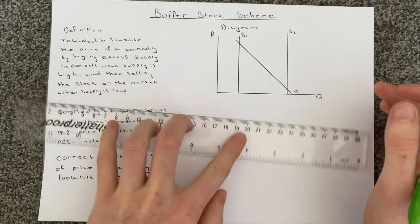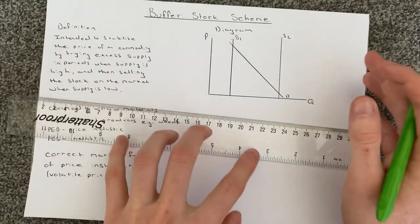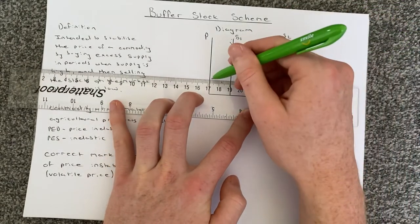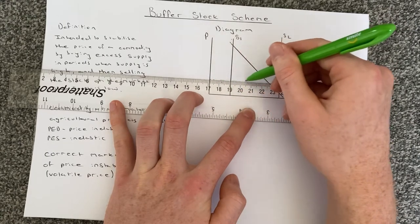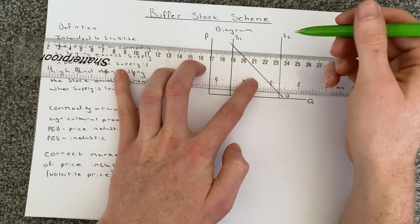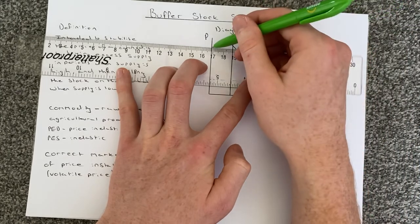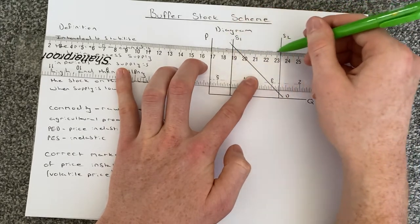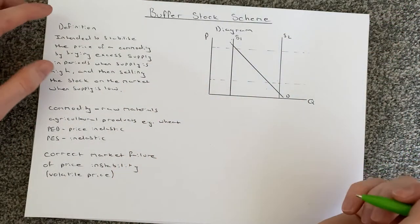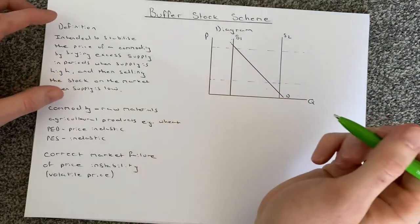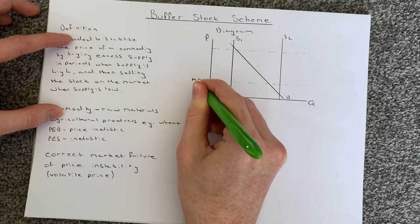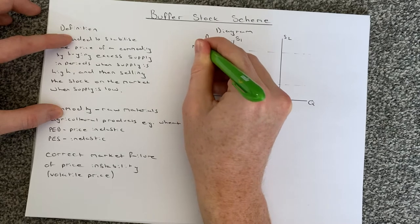What we're going to do now is add in some prices. We'll draw in a dashed line here and continue it past our supply curve, and then draw another dashed line up here which we also extend beyond. We're going to label these prices on the y-axis: this lower one we label the minimum price, and this upper one we label the maximum price.